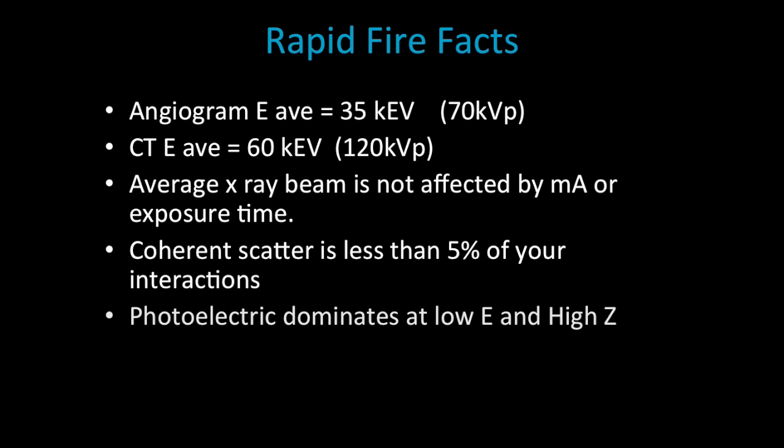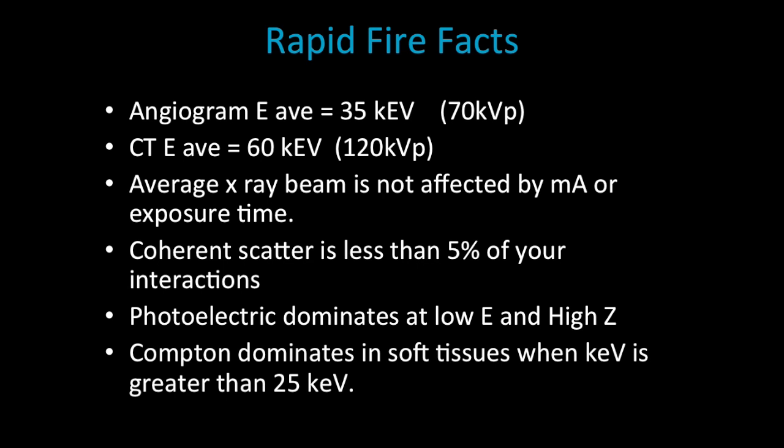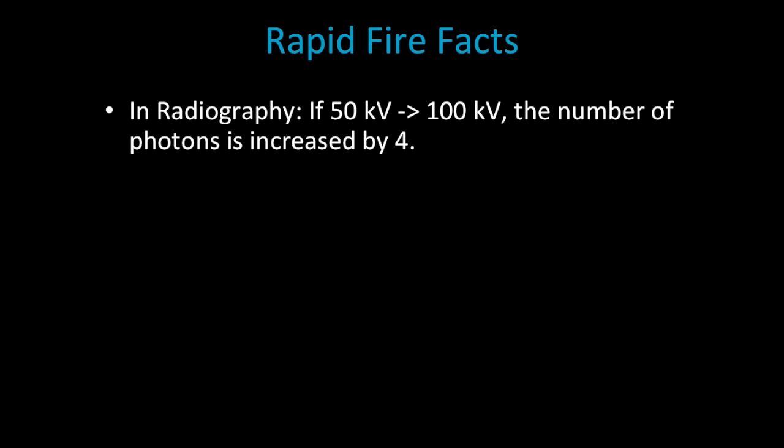Coherent scatter tends to be less than five percent, and photoelectric dominates at low energy level and high atomic number. Compton dominates in soft tissue when keV is greater than 25. At 25 keV we have the same ratio of photoelectric and Compton interactions, and this is specific for soft tissues. In radiography, if we move from 50 keV to 100 keV, the number of photons is increased by four. The k edge for iodine is 33 keV, and you need to remember that because it's a fairly important concept in all of diagnostic imaging. Scatter is isotropic, meaning that it can go in any direction.